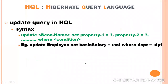First we will discuss the update query in HQL, focusing on the syntax. The update query in HQL is similar to SQL. The syntax is: first 'update' followed by the bean name, then 'set' followed by bean property name equal question mark, comma another bean property name equal question mark, and a where condition can be specified if you want to update specific rows.